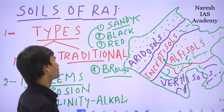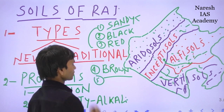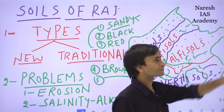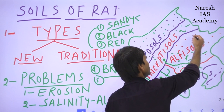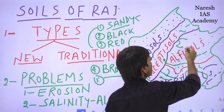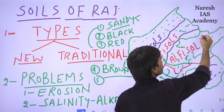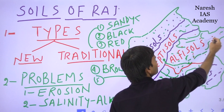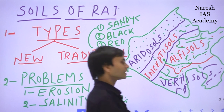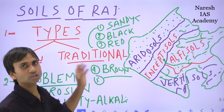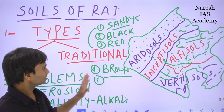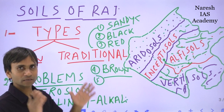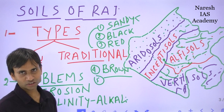Alluvial soils are mainly found in eastern Rajasthan - the part covering Jaipur, Alwar, Bharatpur, Dholpur, Karauli, Sawai Madhopur, and Dausa. This belt comes under alluvial soil. These are the main traditional types of soils in Rajasthan.